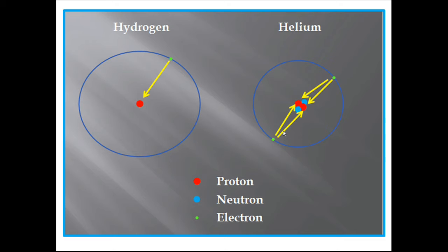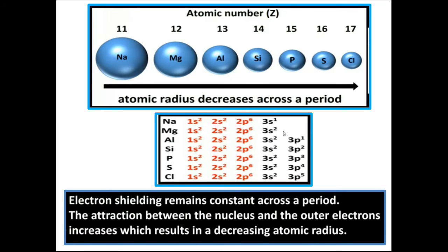Another example: in the third period containing sodium, magnesium, aluminium, silicon, phosphorus, sulfur, and chlorine, atomic radii decrease across the period. In the case of sodium, only one electron is present in the valence shell; magnesium has two; aluminium has three; and chlorine has seven electrons in its valence shell. So seven-sided attraction develops between the nucleus and the valence shell, and the nucleus pulls electrons closer to itself, resulting in a decrease in size.